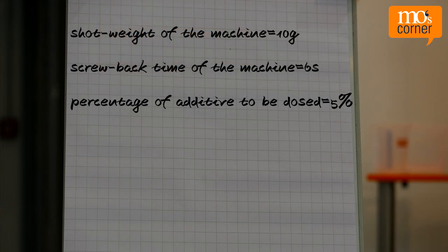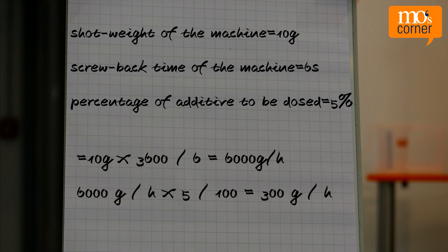This is the dosing rate that the dosing unit must have. 5% of this is the dosing rate the dosing station must have for the additive. So: 6000 grams per hour times 5 divided by 100 equals 300 grams per hour.